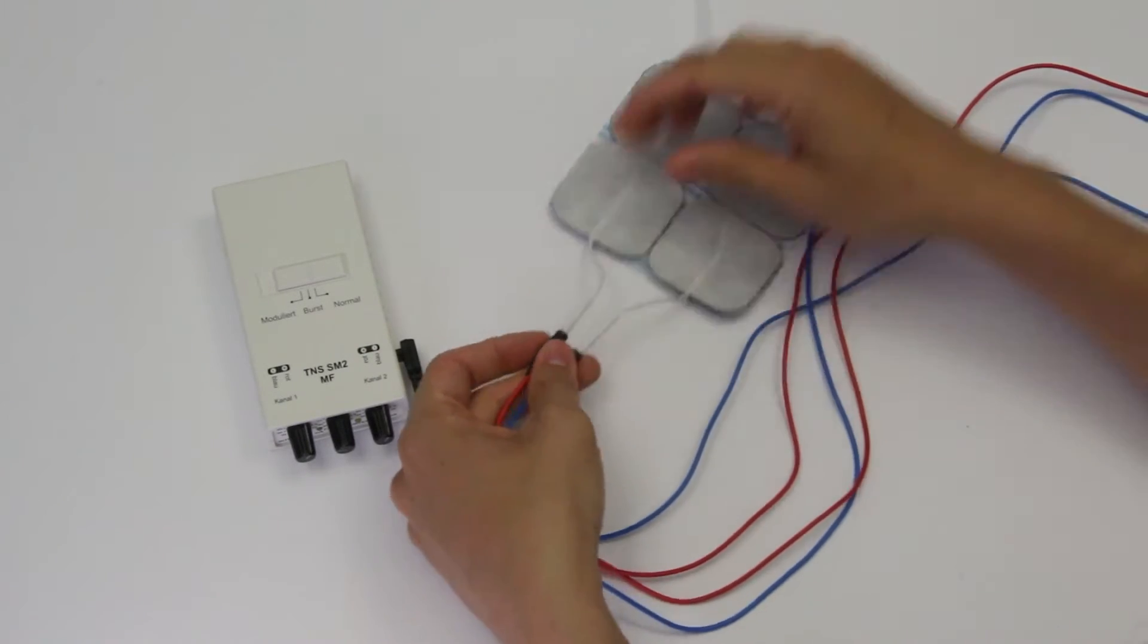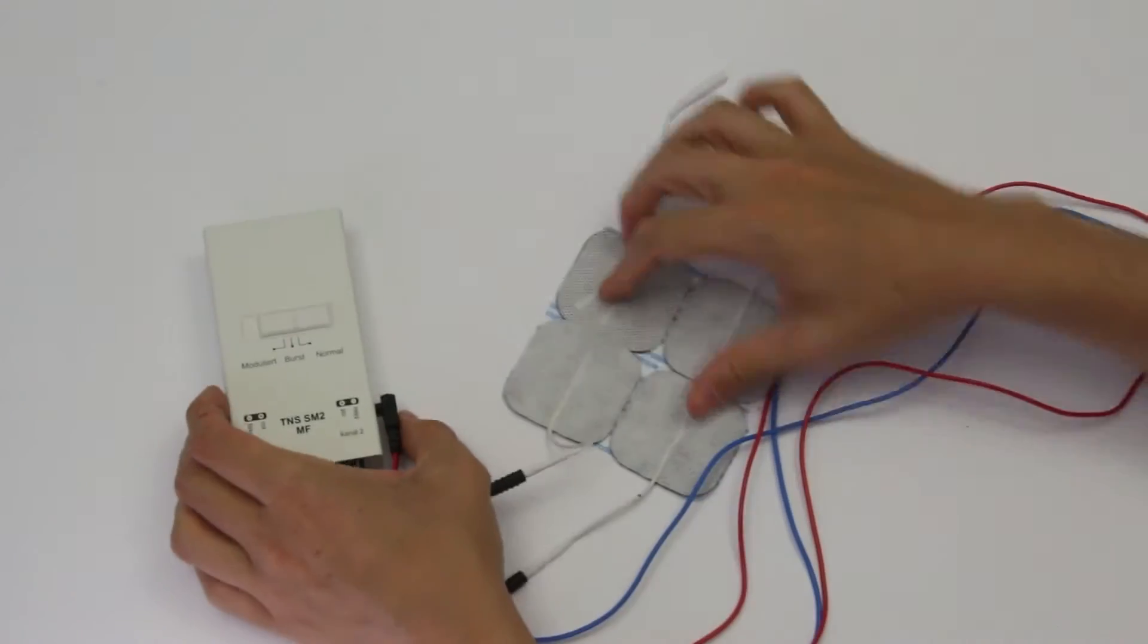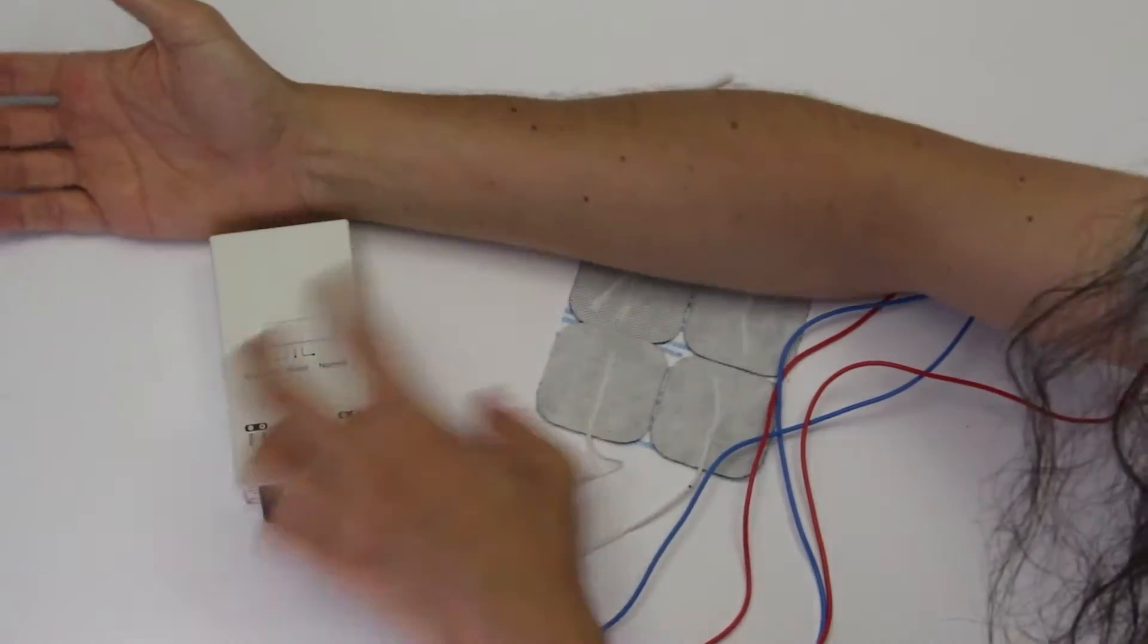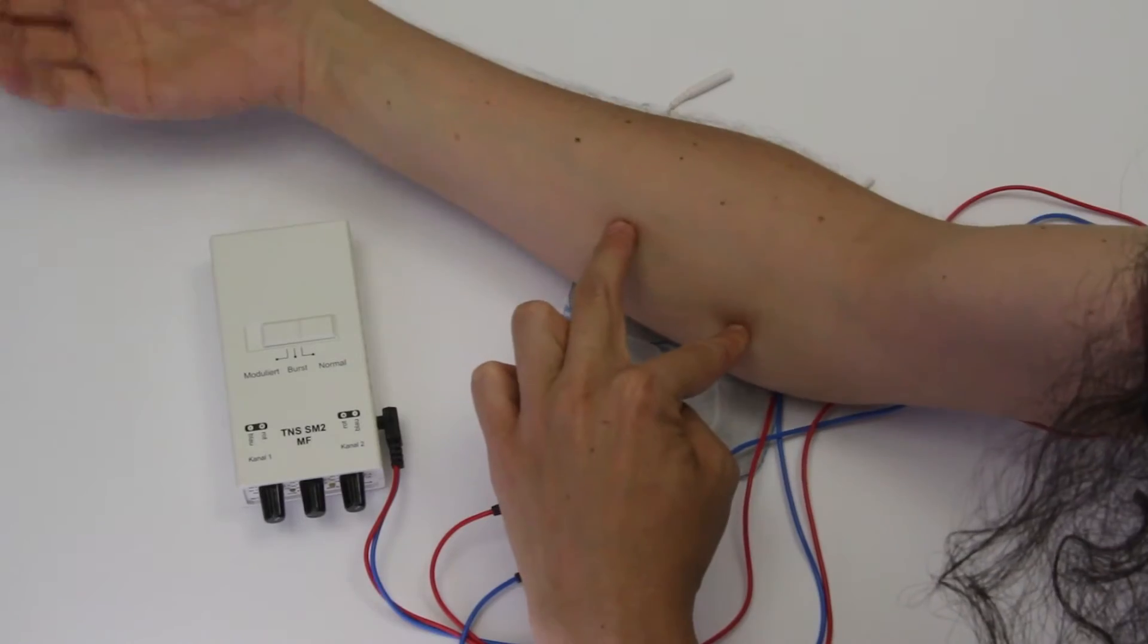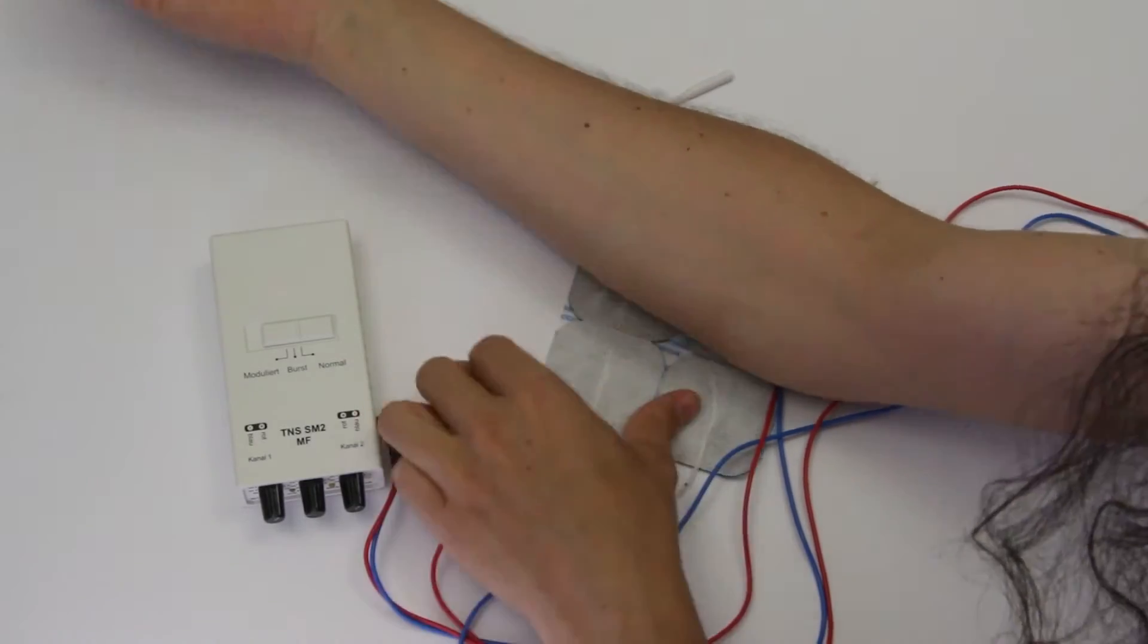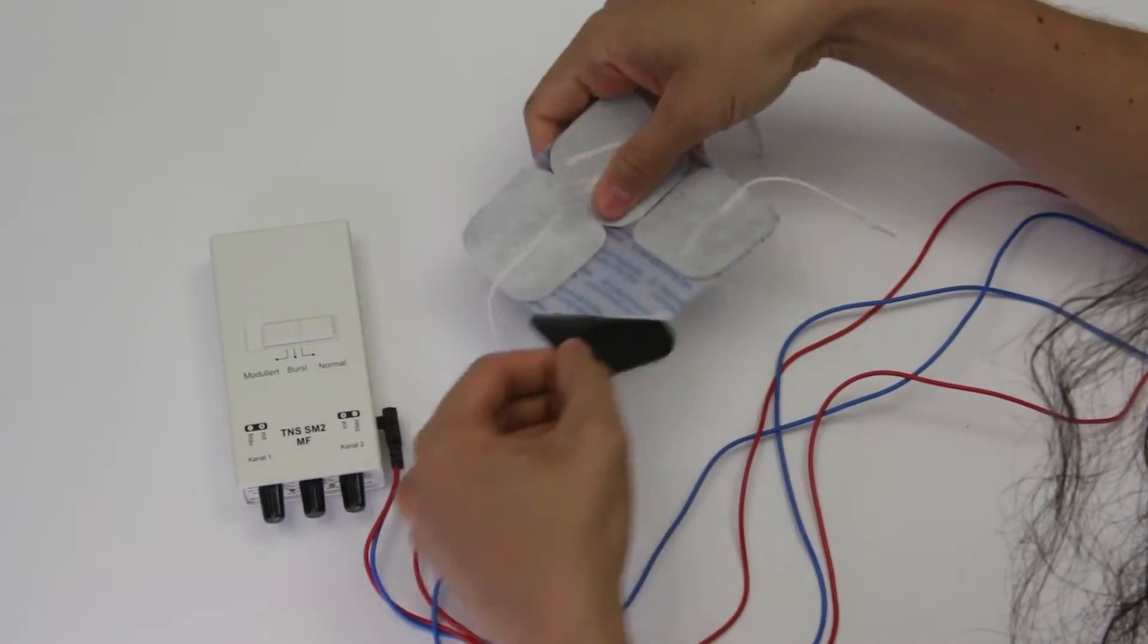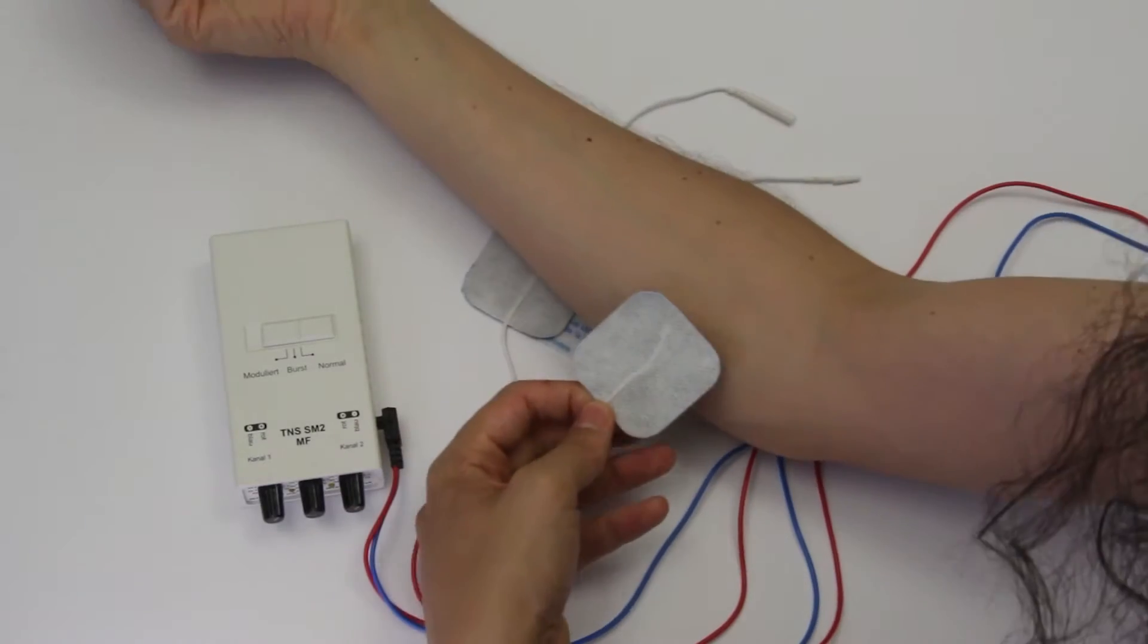In electrical muscle stimulation two electrodes make one channel. Also in order to stimulate one muscle you need the minimum of two electrodes, a positive and a negative. Here I'm locating the palm flexor, that's the muscle that moves my palm inwards sort of like clenching the fist.